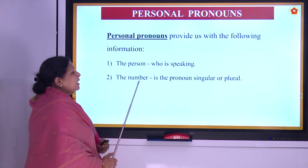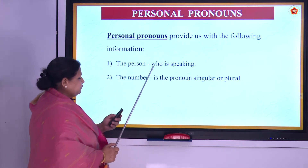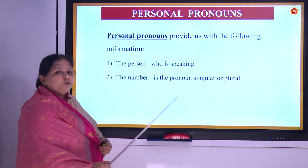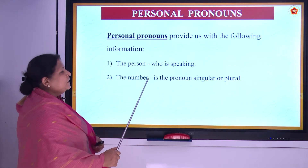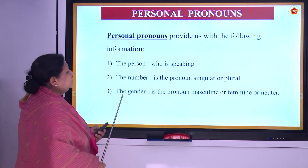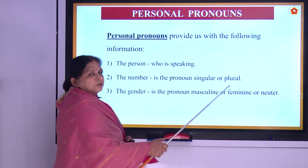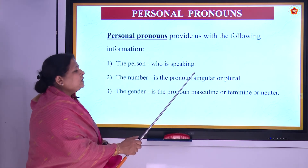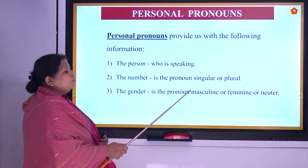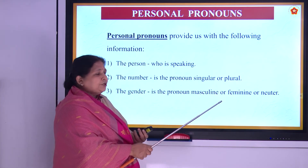If you have two teachers, it will be plural — standing on the same dais, you will have plural. Then, gender — is the pronoun masculine, feminine, or neuter? If your teacher is male, then you will have 'he', and if your teacher is female, then you will have 'she'.